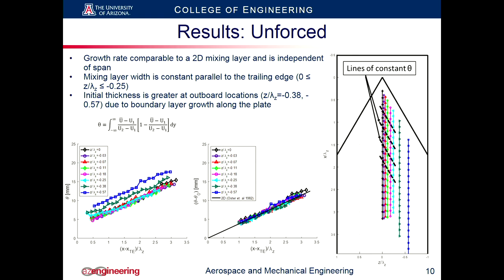Looking at the growth rates of the unforced mixing layer, the momentum thickness versus relative distance from the trailing edge collapses nicely onto a single curve corresponding to a plane parallel to the trailing edge. These momentum thicknesses are more or less constant, with the exception of the outboard locations which have a greater initial momentum thickness, likely due to the boundary layer growing over the increased distance. However, when we subtract off the initial momentum thickness, it all grows at the same rate, comparable to a 2D mixing layer.